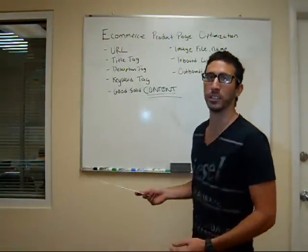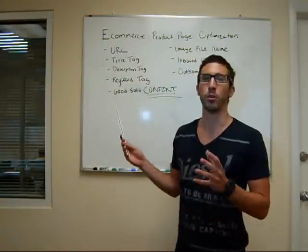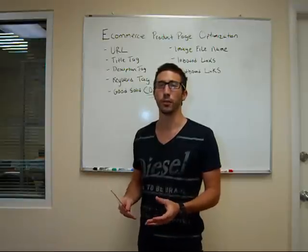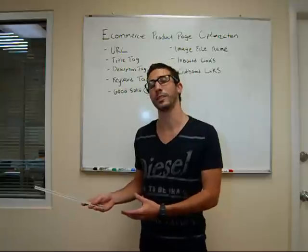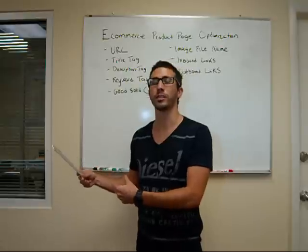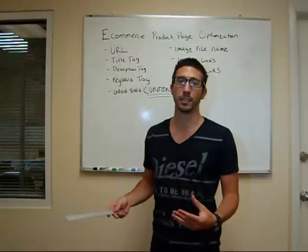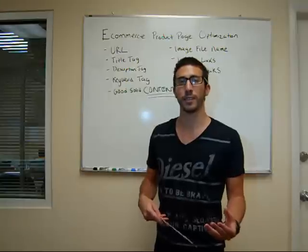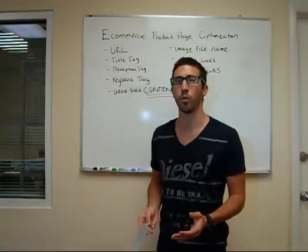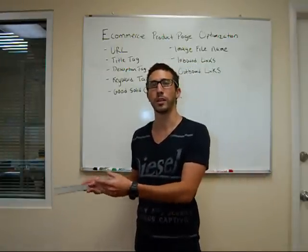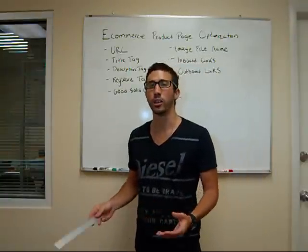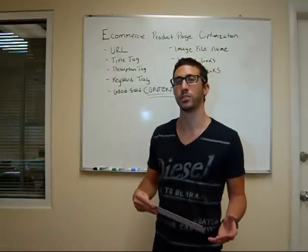The last thing is outbound links. The common theory is the more inbound links you have, the better — and that's probably true. But you do want to give a link outward sometimes, especially to an authoritative site. For example, if you have a product and the manufacturer has that product on their page with a description but isn't selling it, you may want to link to them. That manufacturer's site could be authoritative with Google, and linking outward shows Google that you have the product while also pointing to a source with a lot of information on it. You don't want to do this on all your products — it's just a tactic that could work for certain product pages.